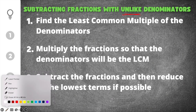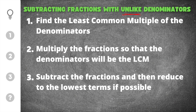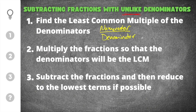When we subtract fractions with unlike denominators, the first thing we have to do is find the least common multiple of the denominators. Quick refresher: in a fraction you have a numerator, then the fraction bar, and then you have a denominator. We have to find the least common multiple, which means it's the smallest multiple for both denominators in the problem.